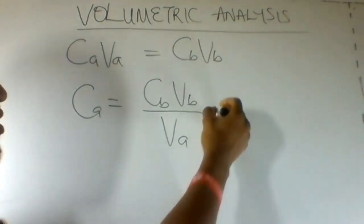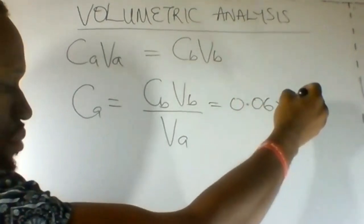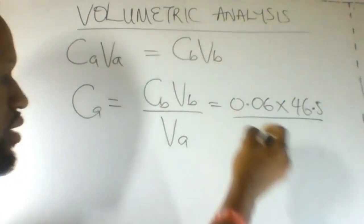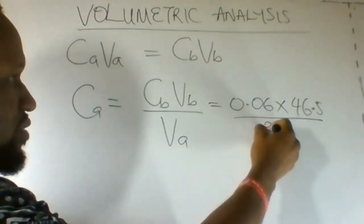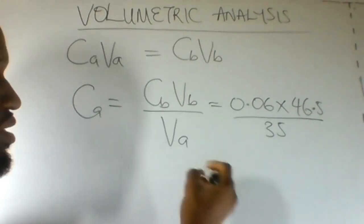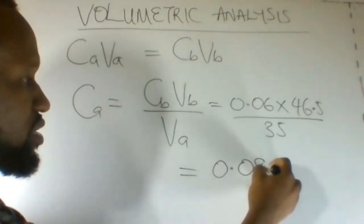This will give us 0.06 multiplied by 46.5 divided by 35. 0.06 multiplied by 46.5 divided by 35. Our answer there is 0.08 mole per dm cube.